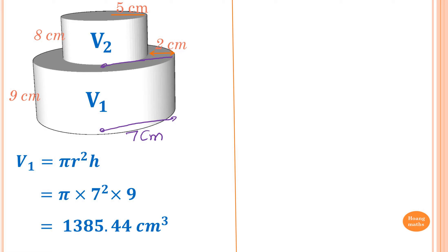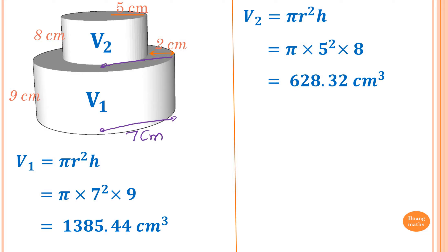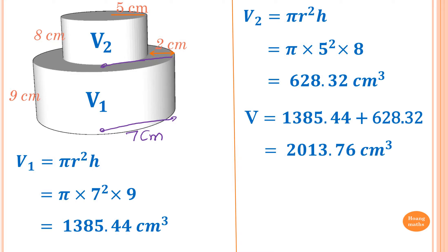For volume 2, V2 equals pi r squared h, which is pi times 5 squared times 8, giving me 628.32 cubic centimeters. Adding the two volumes together: 1,385.44 plus 628.32 gives me 2,013.76 cubic centimeters.